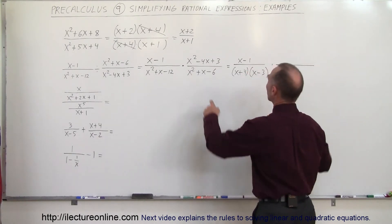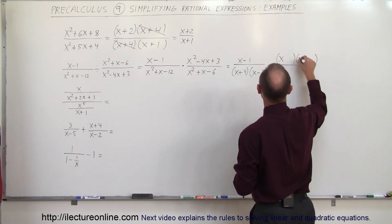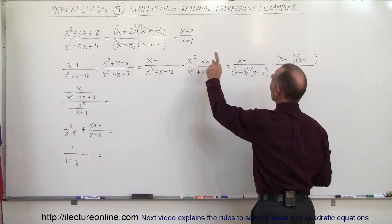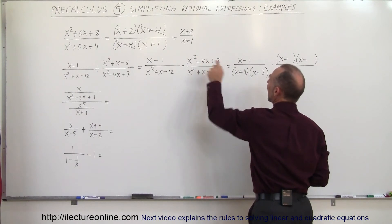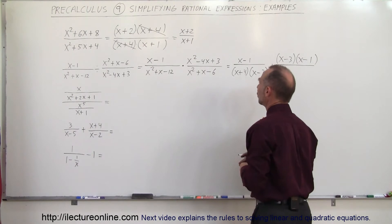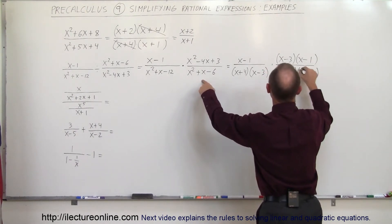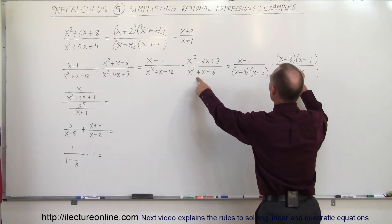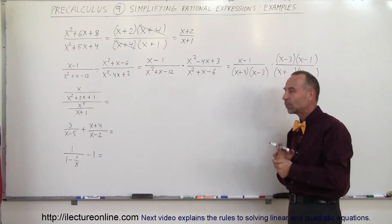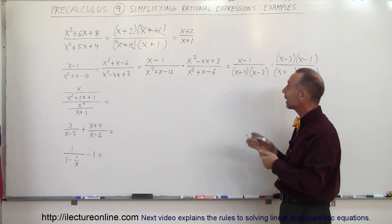Times the numerator — I want to factor first. I have x and x. I have a minus here and a plus there, so they're both minus. When I multiply I get 3, when I add I get 4, so 3 and 1 are the right two numbers. In the denominator I end up with two binomials — x and x. This is negative, that's positive, so one sign is positive and one is negative. When I multiply I get minus 6, when I add I get plus 1, so that would be positive 3 and negative 2.